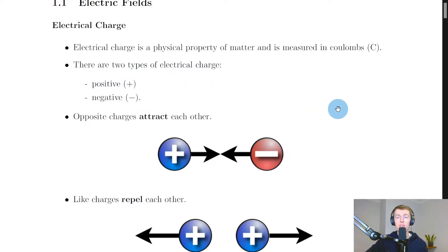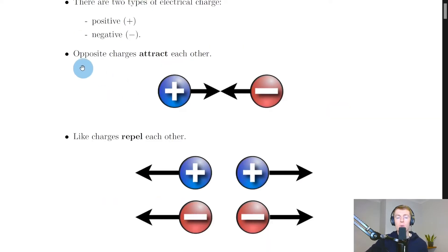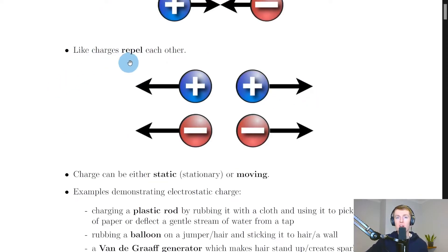We can look at how the different charges interact with each other. Opposite charges attract each other. So if you've got a positive charge near a negative charge, they will attract each other. But on the other hand, like charges repel each other. So if the charges are the same and they're near each other, they want to get away from each other.